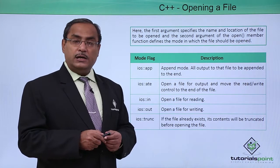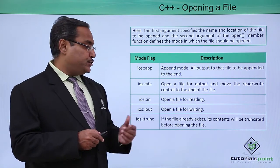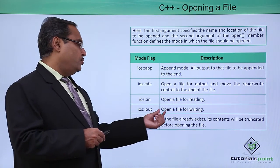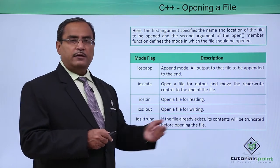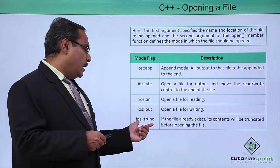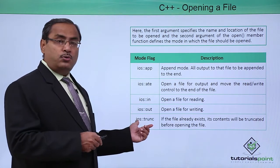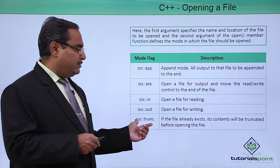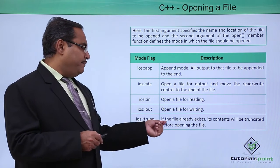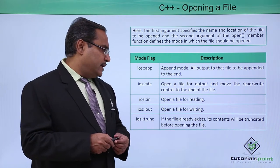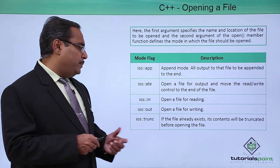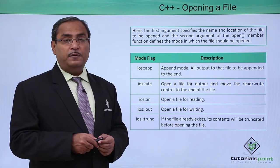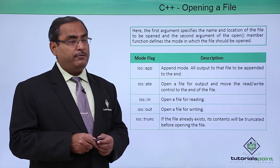ios::in opens a file for the reading operation. ios::out opens a file for writing. ios::trunc — if the file already exists, its content will be truncated before opening the file, so the previous content will be removed.